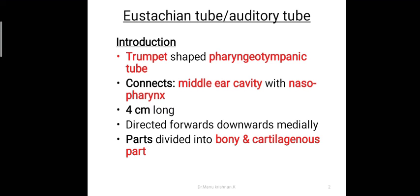It is 4 cm in length, directed forwards, downwards and medially, and it is composed of two parts: the bony part and the cartilaginous part. So to summarize, it is trumpet shaped, connects the middle ear cavity or tympanic cavity with the nasopharynx, is 4 cm in length, and composed of two parts — the bony part and the cartilaginous part.